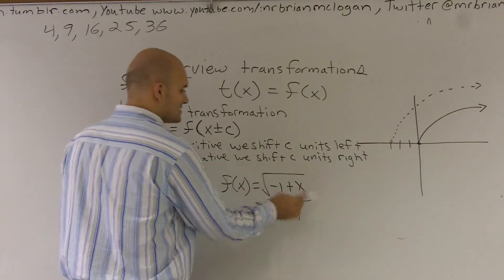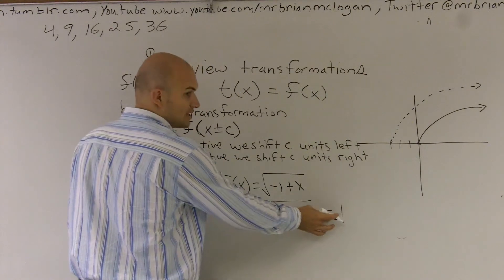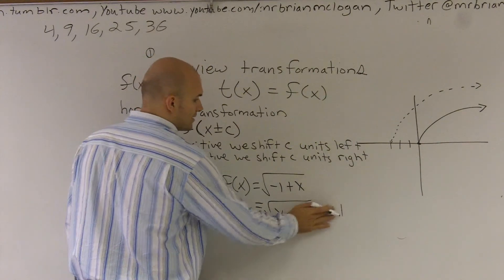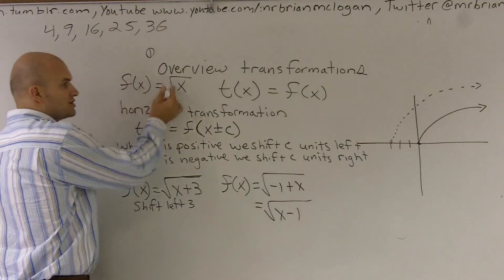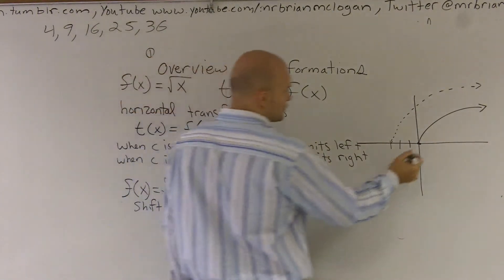And therefore, now, since this is under the function, if this minus was outside of there, that would tell us to shift down one unit. But since it's inside of our function, because our function is the square root, since it's inside of our function, we're going to shift this one unit right.